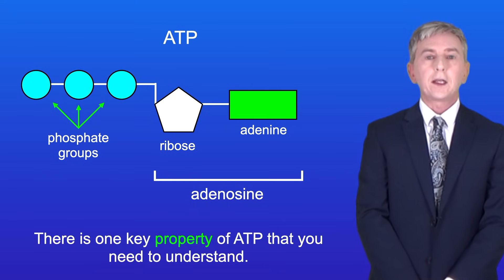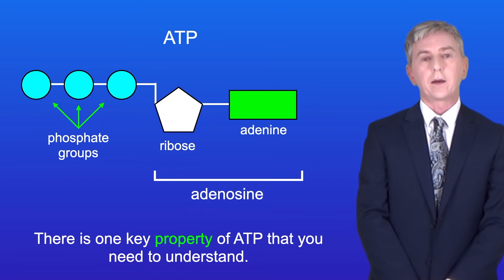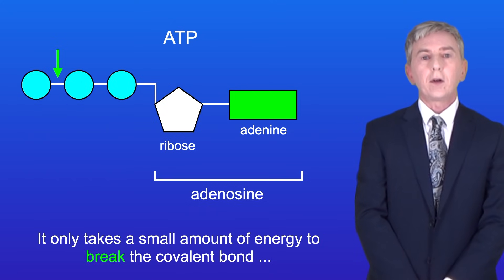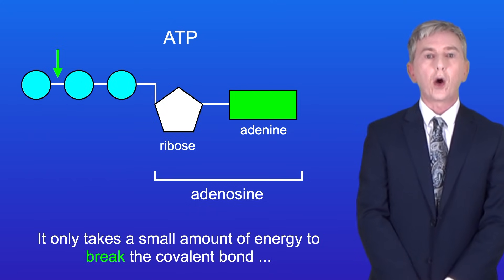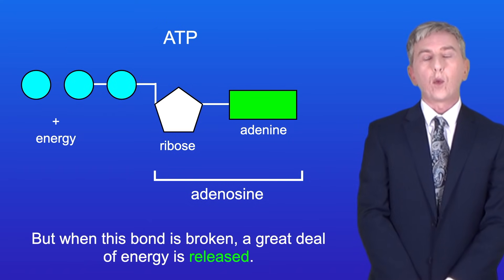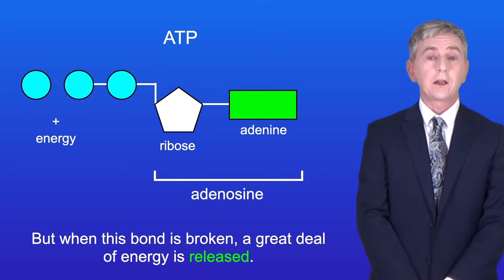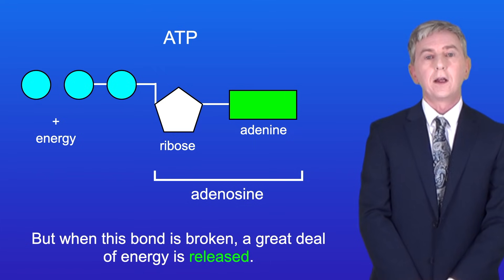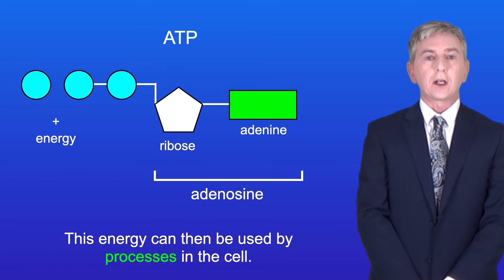Now there's one key property of ATP that you need to understand. It only takes a small amount of energy to break the covalent bond holding the last phosphate group in place. But when this bond is broken, a great deal of energy is released, and this energy can then be used by processes in the cell.